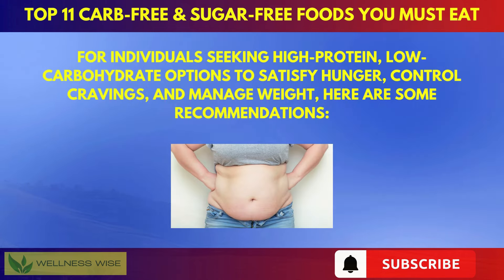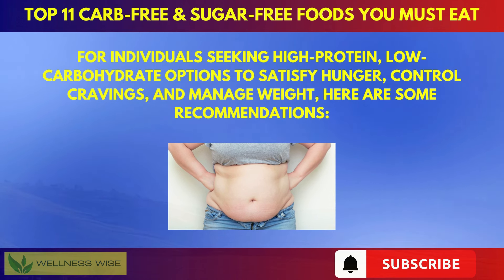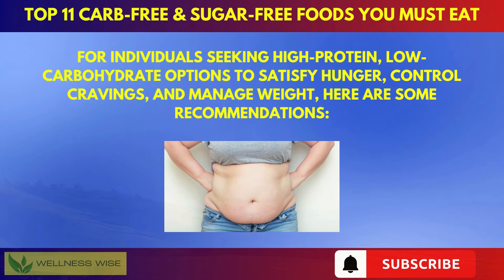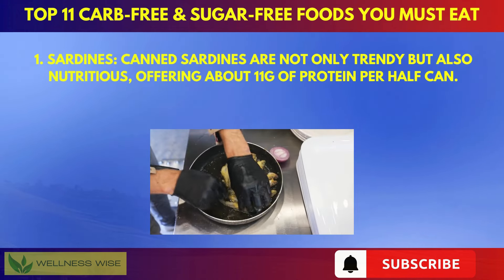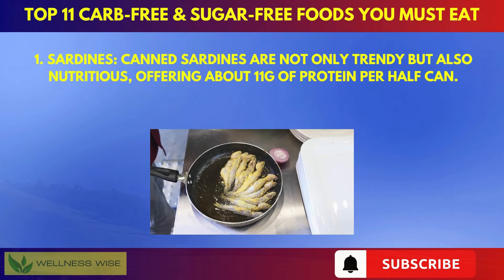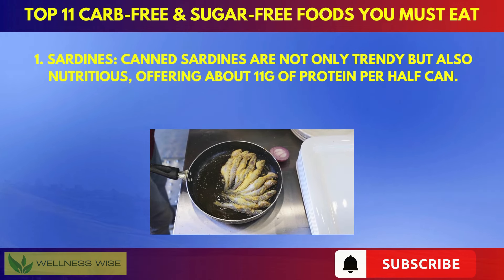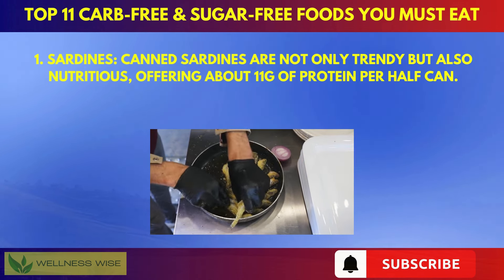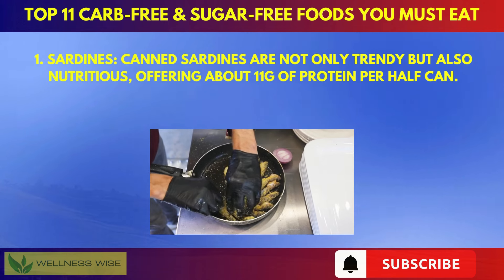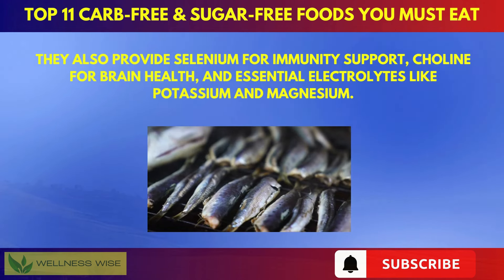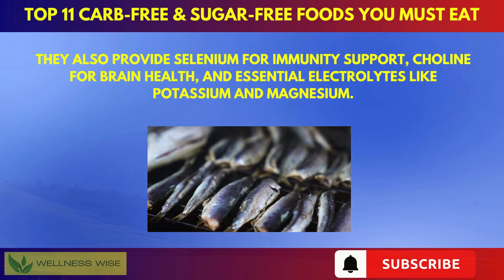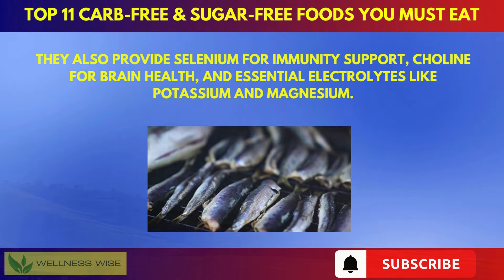For individuals seeking high-protein, low-carbohydrate options to satisfy hunger, control cravings, and manage weight, here are some recommendations. First, canned sardines. Canned sardines are not only trendy but also nutritious, offering about 11g of protein per half can. They also provide selenium for immunity support, choline for brain health, and essential electrolytes like potassium and magnesium.